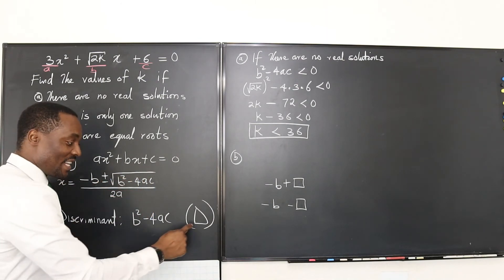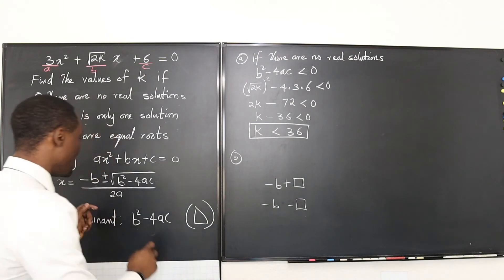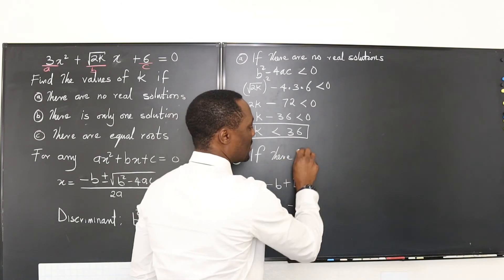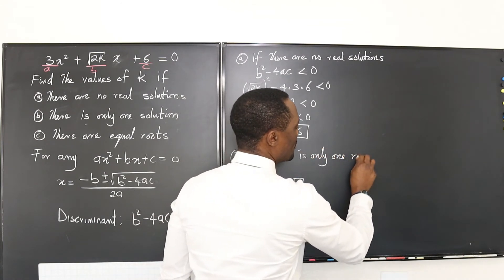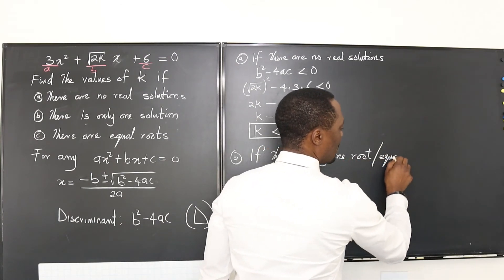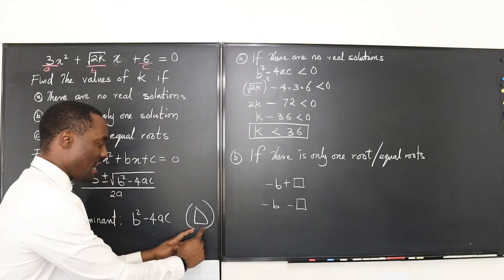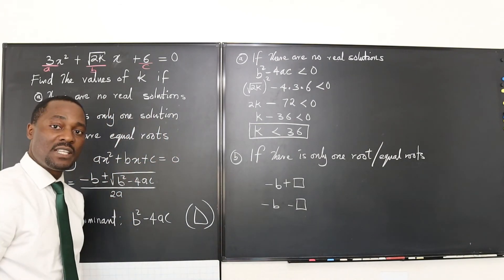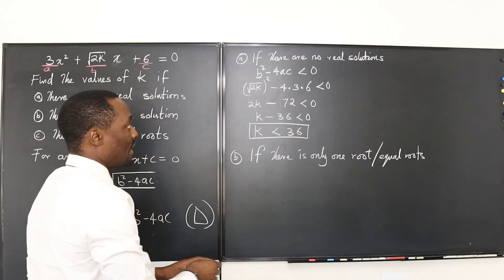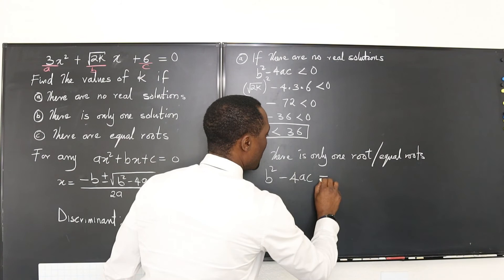So for you to have both answers the same, ending up with the same answer for this and this, which means you have only one solution, it means what you are adding from here is a zero. And for you to get a zero here, it means what's in here is a zero. The discriminant will give you a zero. So we can go back here and write that the condition for you to have only one solution. So if there is only one root or equal root, it simply means that the discriminant gives us a zero because that's when we're going to get a zero here. And that's what we're going to use here.